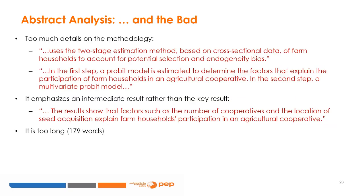There are, however, quite a few irritants in this abstract. The author allocates too much space for a discussion of his methodology. He starts with describing the two-stage estimation method, then goes on to describe the two steps involved: in the first step, a probit model is estimated to determine the factors that explain the participation of farm households in an agricultural cooperative; in the second step, a multivariate probit model. Notably, he chose to emphasize an intermediate result rather than the key result — the factors such as the number of cooperatives and location of seed acquisition that explain farm households' participation in an agricultural cooperative.